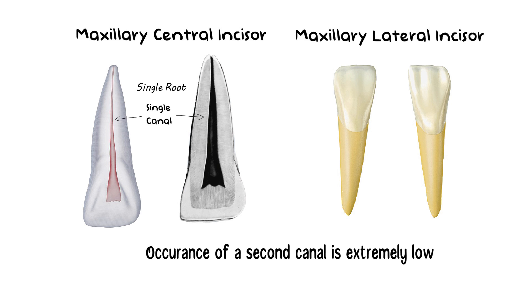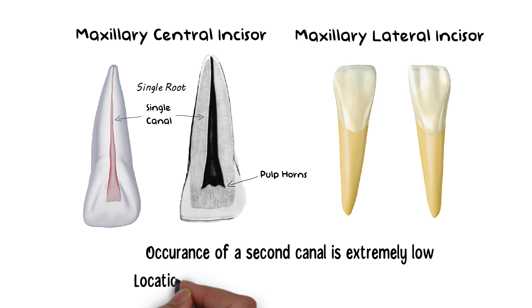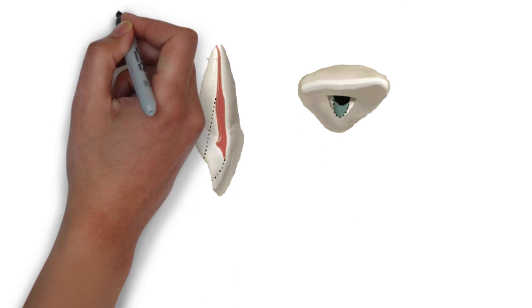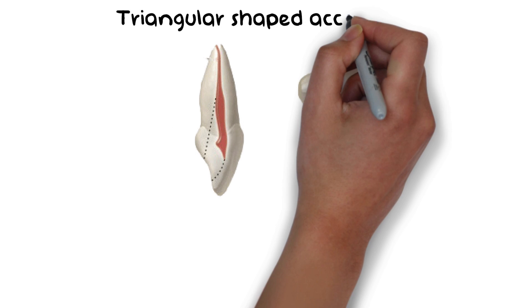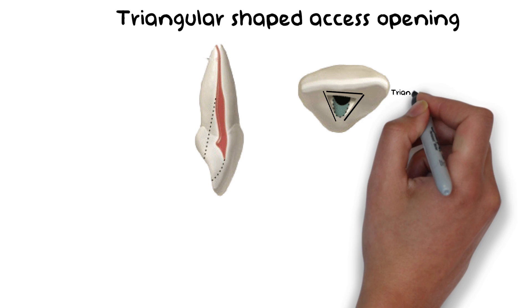In young individuals, the maxillary central and lateral incisors have prominent pulp horns, which makes the location of the roof of the chamber a little higher than in older teeth. Because of these pulp horns, the maxillary central and lateral incisors have a triangular outline form for access preparation. So in young individuals, the access outline form is triangular in shape.